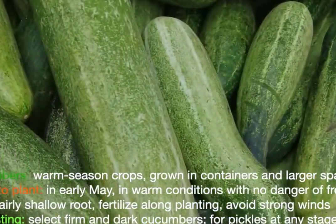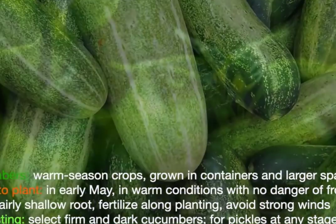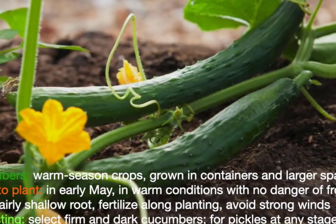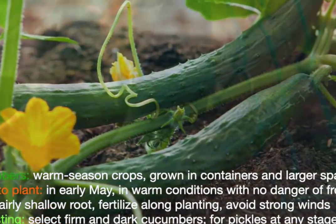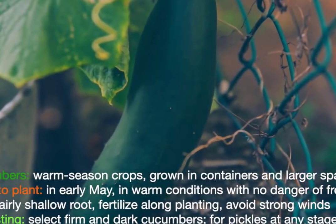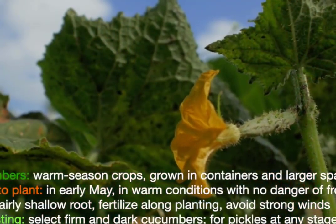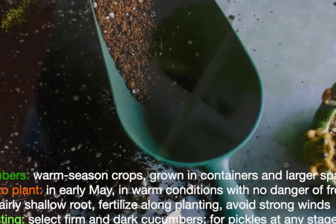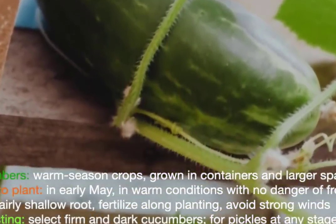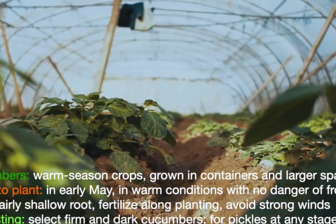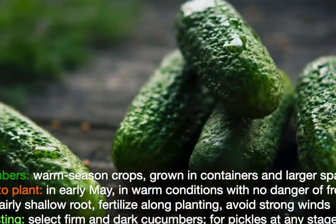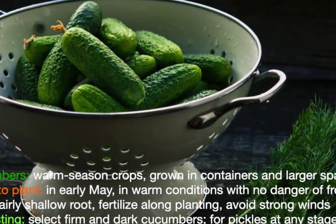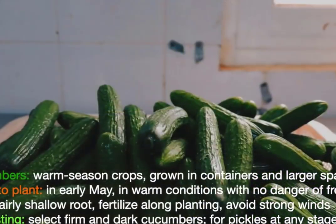Cucumbers are a warm season crop and can be grown in larger spaces and even in containers. Cucumbers require warm conditions with no danger of frost. For best results, plant early using black plastic mulch to warm the soil. Cucumbers are fairly shallow rooted, requiring caution at initial cultivation. Apply fertilizer along the row when the vines have developed to improve production. Avoid areas where strong winds might damage vines. For harvesting, select firm, dark-colored cucumbers. Small cucumbers may be harvested for pickles at any stage.